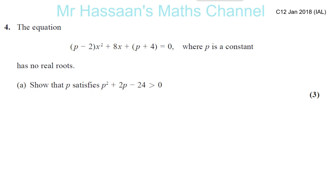We have here question number 4 from January 2018, C12. This is a question about quadratic curves and discriminant. The question says: the equation (p minus 2)x squared plus 8x plus (2 plus 4) equals 0, where p is a constant, has no real roots.